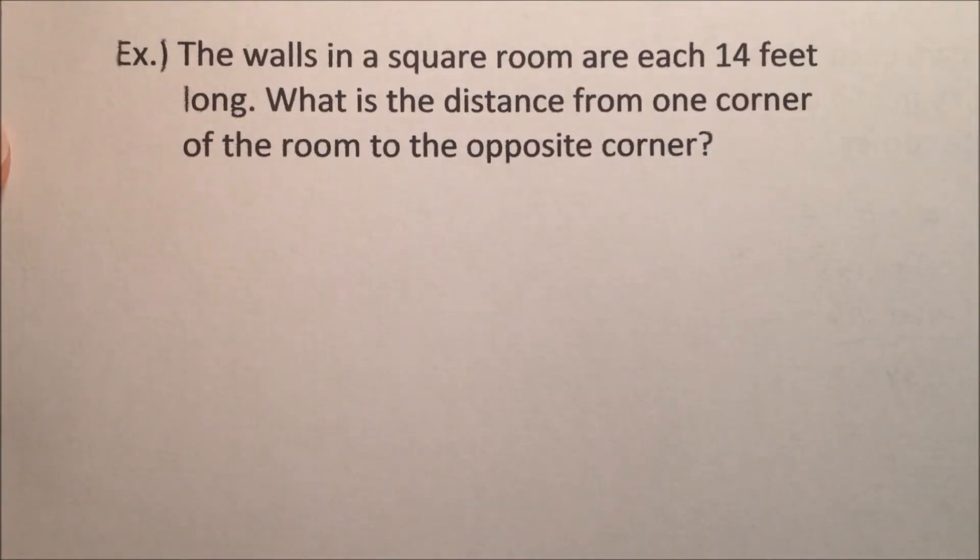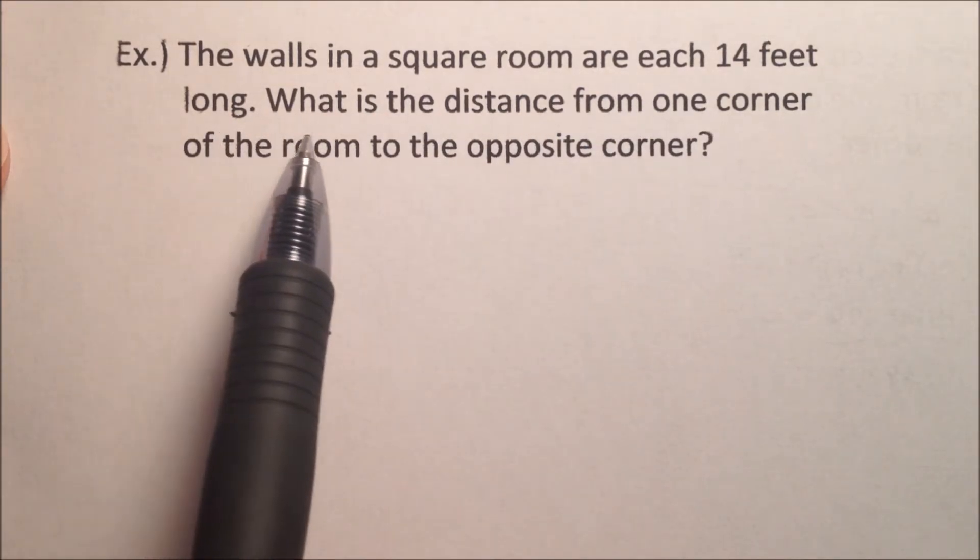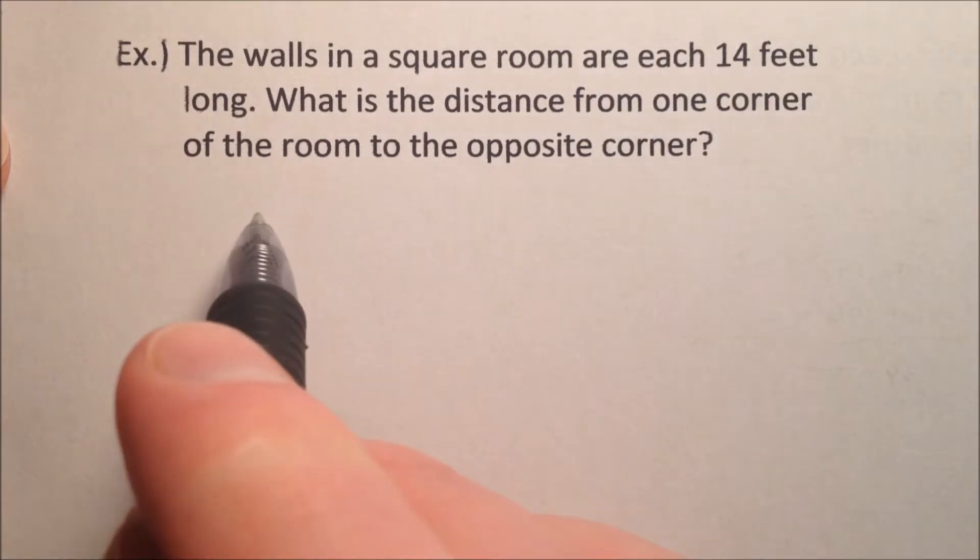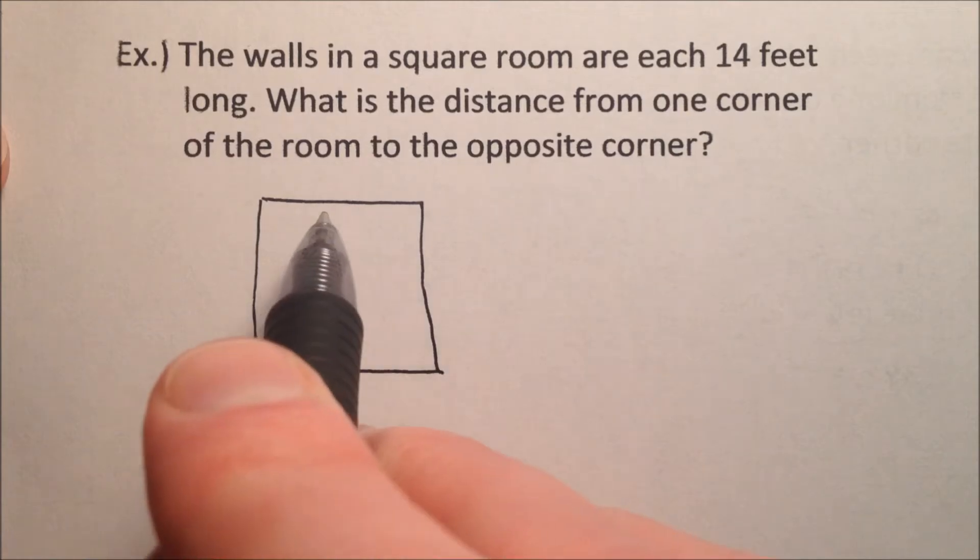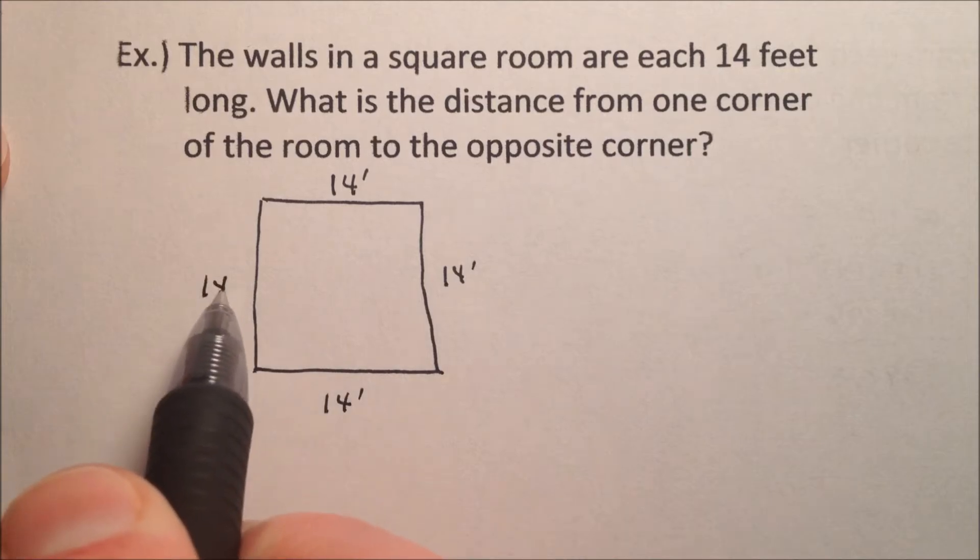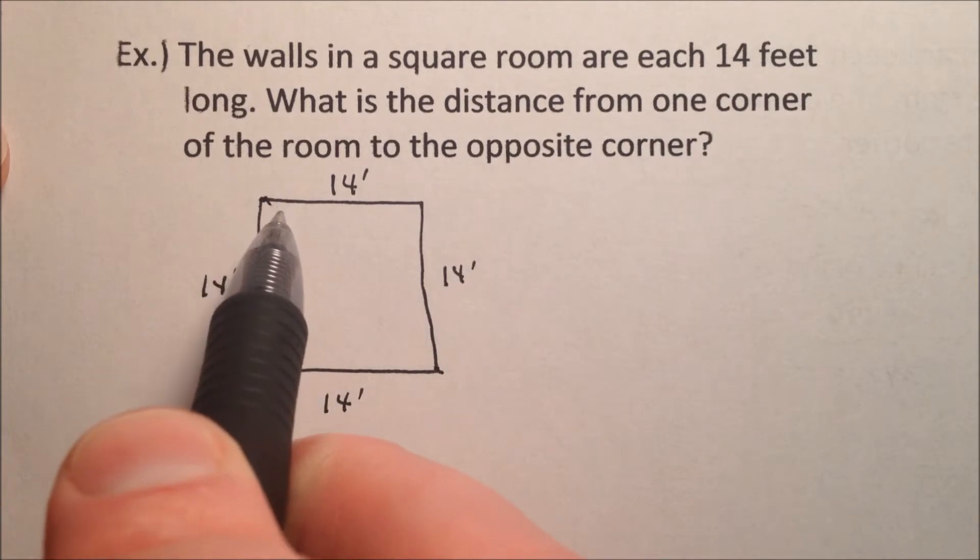In our second word problem, it says the walls in a square room are each 14 feet long. What is the distance from one corner of the room to the opposite corner? Okay, well, if we have a square room, I'm going to go ahead and draw a picture, 14 feet all the way around because it's a square room. And we want to know the distance from one corner to the opposite corner. So we're looking for this distance right here.